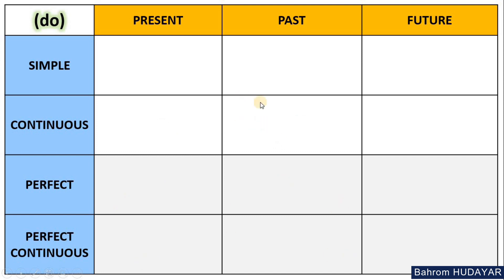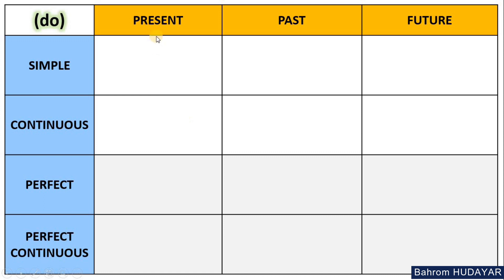Let me show you how this table works. This is the Present Simple box. And this is the Past Continuous box — Past and Continuous. Or Past Perfect Continuous — Past and Perfect Continuous. Now, you tell me where is the Future Continuous box. This one, right? This is Future Continuous. So there are exactly 12 boxes in this table, and each box belongs to a tense — 12 boxes, 12 tenses.